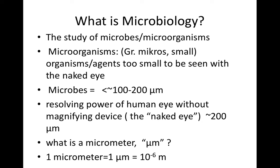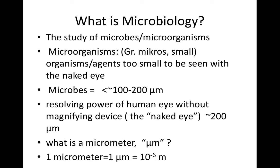So what is microbiology? It's the study of microbes or microorganisms. Microorganisms comes from the Greek mikros, which means small. We could say that microorganisms or microbes are organisms or agents too small to be seen with the naked eye. The resolving power of the naked eye — an eye without any magnifying device — is about 100 to 200 micrometers. So most microbes are smaller than about 100 to 200 micrometers, and we'll need a magnifying device, like a microscope, to visualize them.